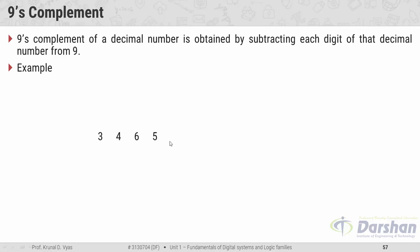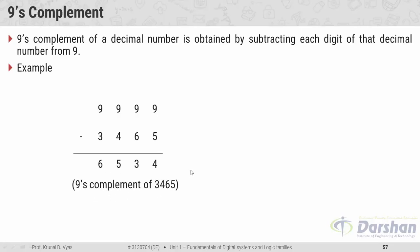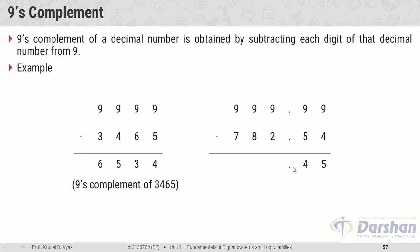For example, to find the 9's complement of 3465, subtract each digit from 9: 9−5=4, 9−6=3, 9−4=5, 9−3=6. So 6534 is the 9's complement of 3465. For a fractional example, the 9's complement of 7820.54: 9−4=5, 9−5=4, point stays as is, 9−2=7, 9−8=1, 9−7=2. So 2170.45 is the 9's complement of 7820.54.